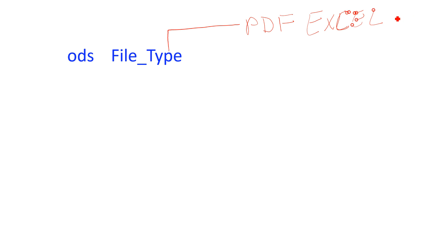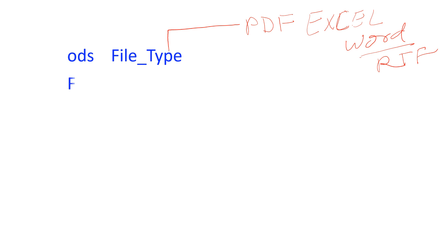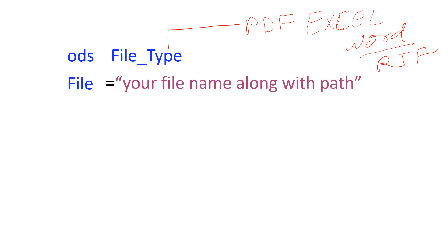If you want MS Word you can use RTF, or HTML — whatever you want. After the file type you use the file statement, and along with that you provide the file name and location where you want to produce the output, just like when we do proc export — same way you provide the location along with the file name and extension.